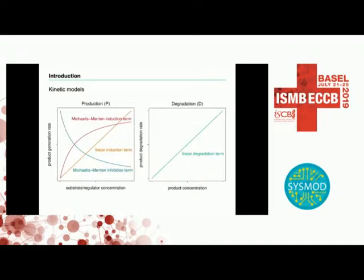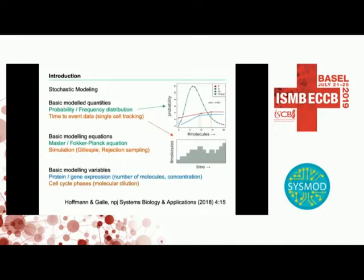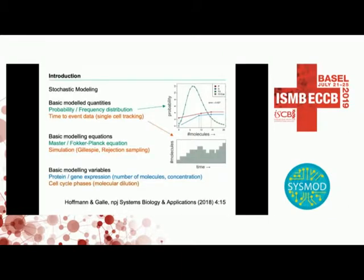I start with a short wrap-up of the kinetic models — the most commonly used Michaelis-Menten kinetics or linear induction term. We have different models for the production, and mostly only one model for the degradation, which is a linear degradation term. I refer to stochastic modeling as I use it here: the basic model quantities are either probability distributions or frequency distributions, and time-to-event data as obtained from single-cell tracking, where you observe molecules over time, and from the appearance and disappearance of molecules, you infer production and degradation rates.